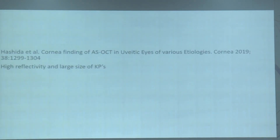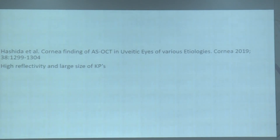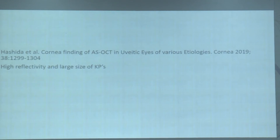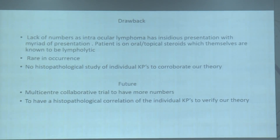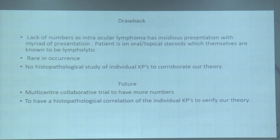We believe this internal reflectivity represents internal lymphoma cells, which secondarily cause an inflammatory response leading to the intervening web-like picture. A similar study found high-reflectivity KPs but did not examine the role of rituximab. Our drawback was a small number of cases due to the rare presentation of lymphoma, and we did not study individual KP histopathology to compare with the clinical picture.